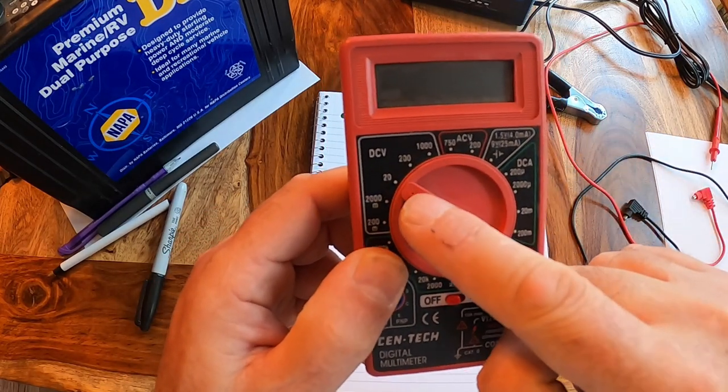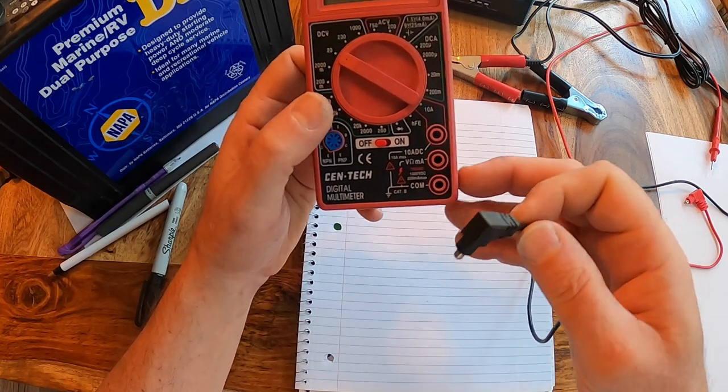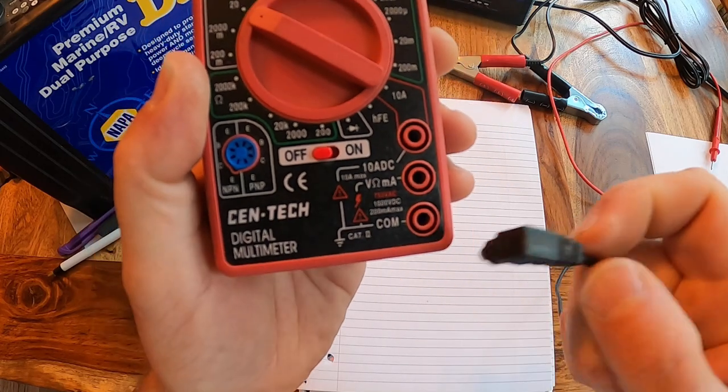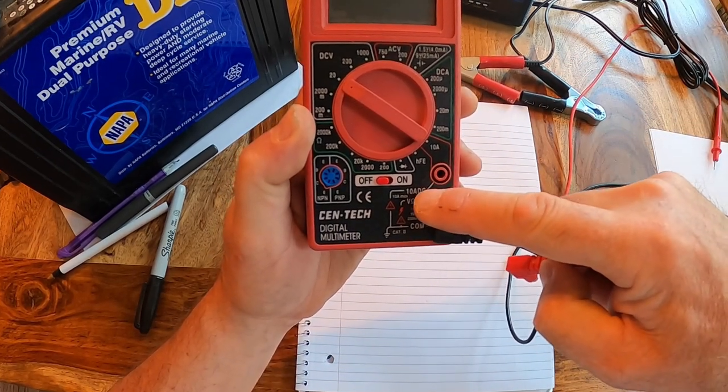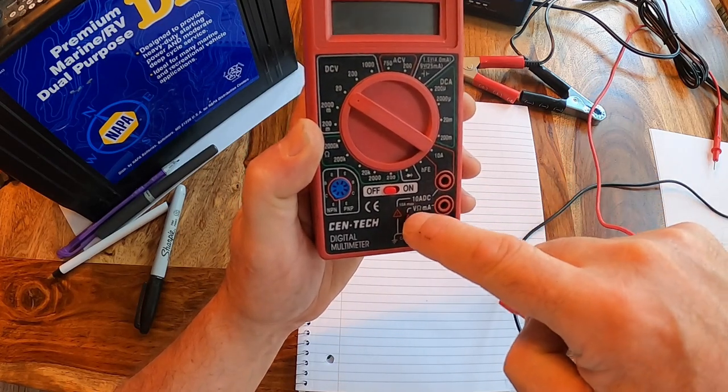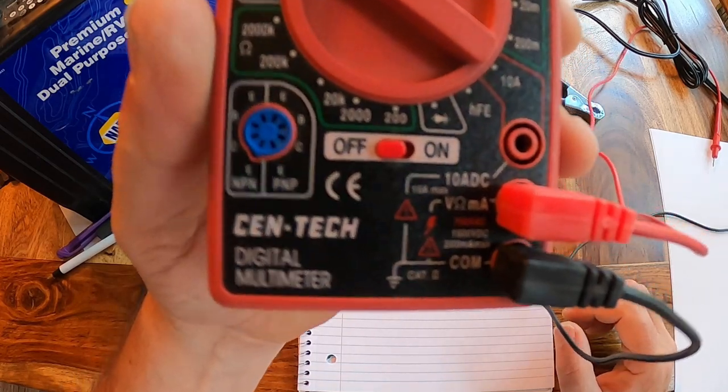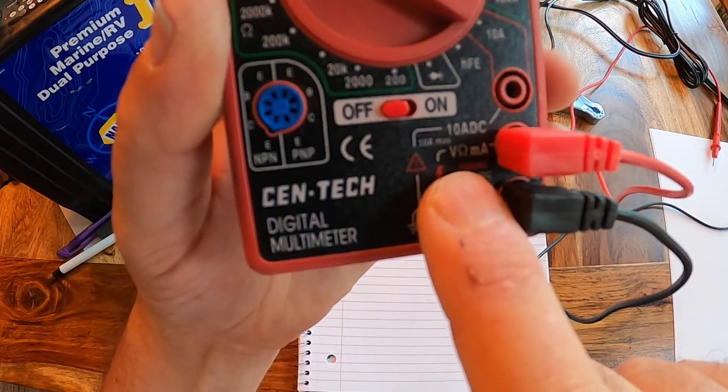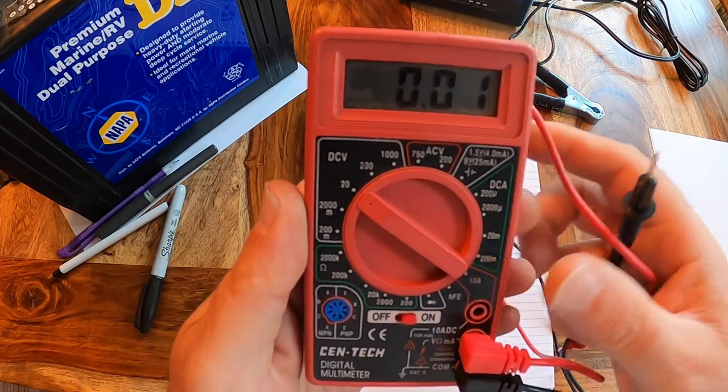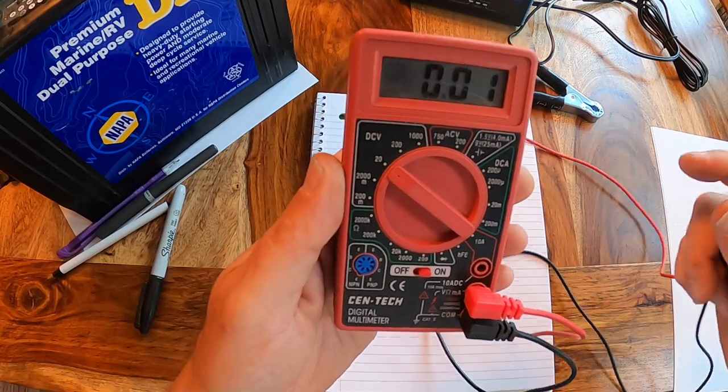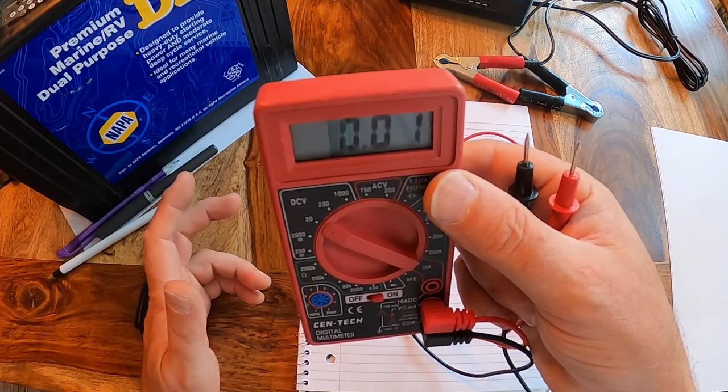You've got these leads. One is called common - the black one goes in common. The red one goes in the one that says volts. We're going to turn it on and look at that. It's showing 0.01 volts, just from radio noise in the room. That's 1 one-hundredth of a volt, not much.